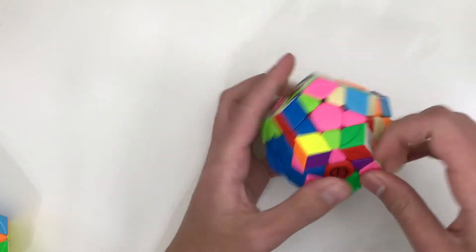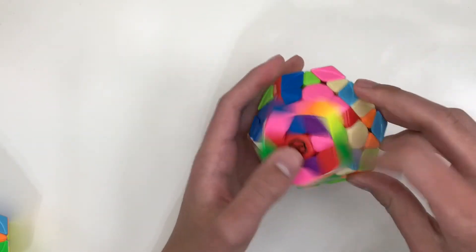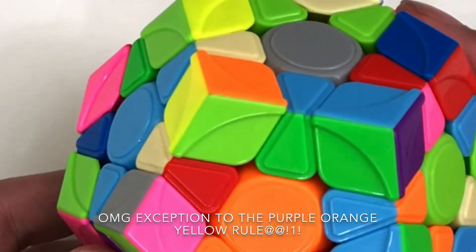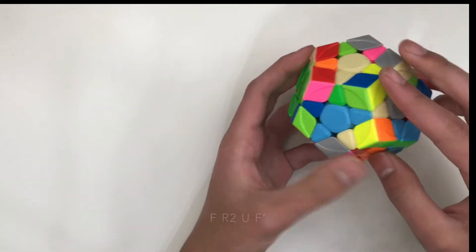Instead of R2, U2, then rotating or doing F moves, just like this. And for S2L, if you're inserting this pair into back here, you can bring up the slot.